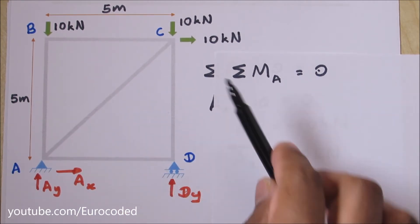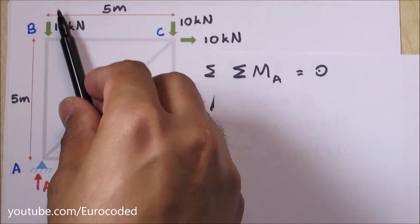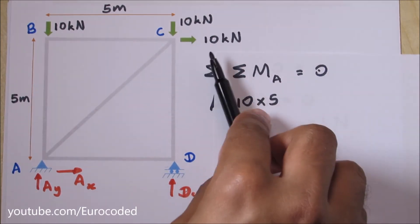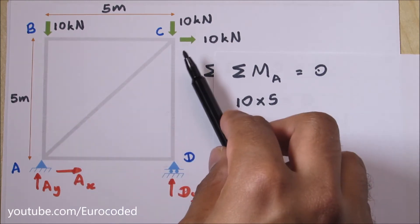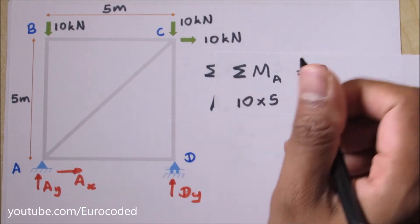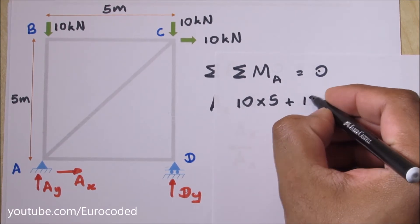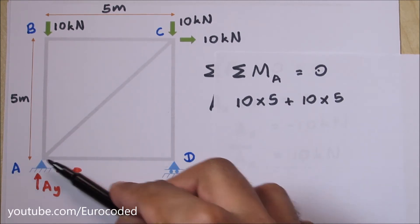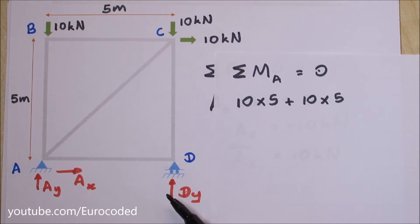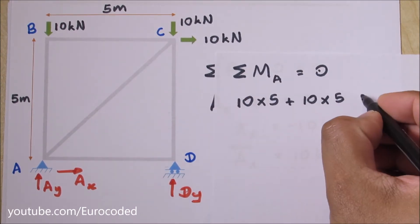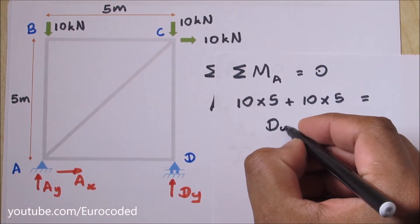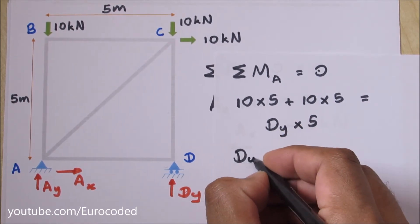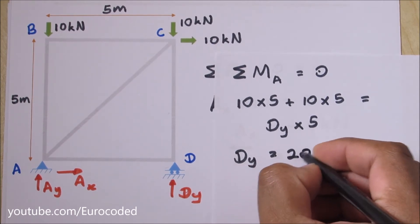Then we can look at this 10 kilo Newton — its lever arm is 5 meters, giving a clockwise moment of 10 times 5. This other 10 kilo Newton also has a lever arm of 5 meters and acts in the clockwise direction, so plus 10 times 5. The DY reaction has a lever arm of 5 meters and acts anti-clockwise, giving DY times 5. Hence, DY is equal to 20 kilo Newton.